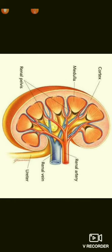The renal artery, renal vein, nerve fibers, and other vessels enter or leave the kidney through the hilum. The kidney is bounded externally by a thin sheet of white fibrous tissue called the capsule.